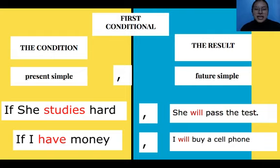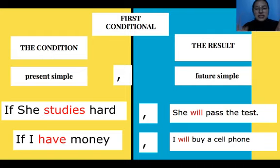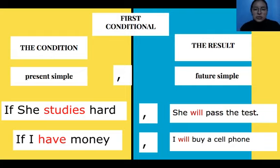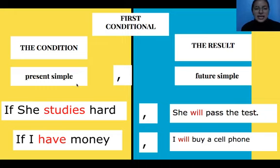First Conditional. In First Conditional, you have to join two sentences. One is a condition, and the second is the result. In the case of the condition, you use one grammar, and in the result, you use another grammar. In the condition, you have to use present simple, and in the result, you have to use future simple.